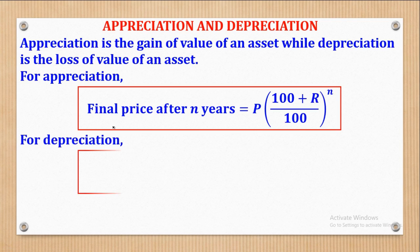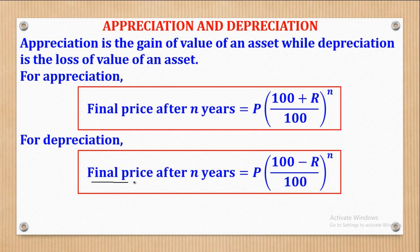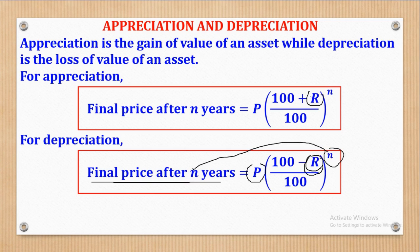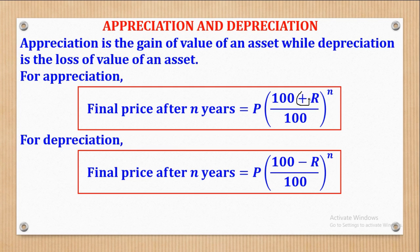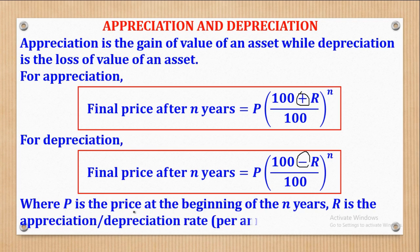For depreciation, the final price after N years will be P times (1 - R/100) to the power N. P is the principal, R is the rate of depreciation, and N is the number of years of interest. The difference is that for appreciation there is a plus, meaning there is a gain, while for depreciation there is a minus, meaning there is a loss. P is the price at the beginning, R is the rate per annum, and N is the time in years.